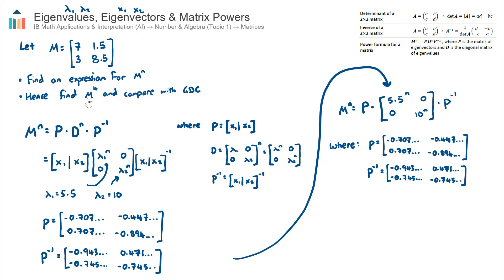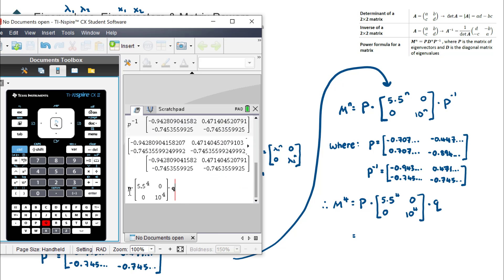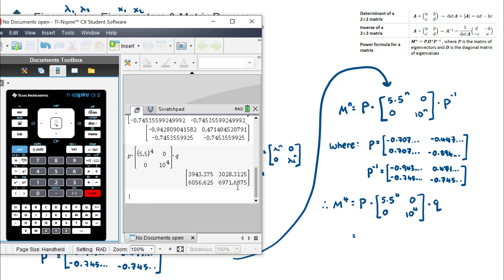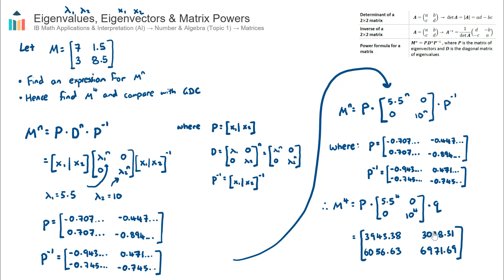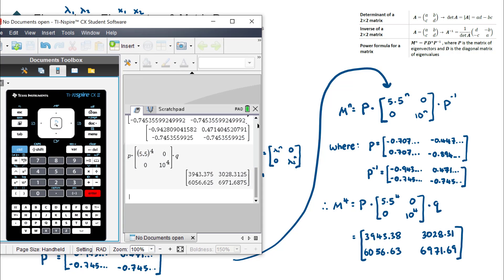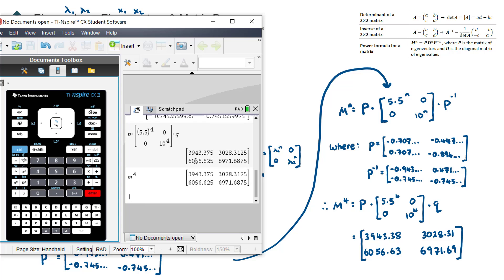Going back to the question — find M to the power of 4 — I write this out as to the power of 4, recalling P stored as P and the inverse of P stored as Q. I enter the expression into the calculator, hit enter, and get the result for M to the power of 4 using eigenvectors and eigenvalues. Comparing that to simply entering matrix M and raising it to the power of 4 directly, I get the same result.